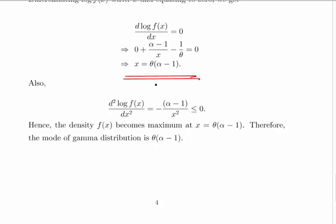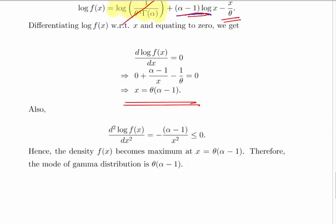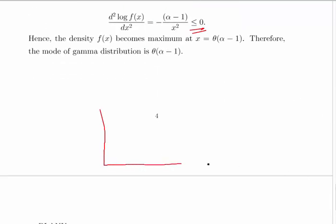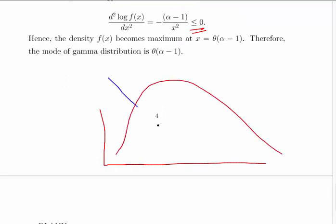Strictly speaking, we should also perform the second derivative test to confirm this is a maximum rather than a minimum. We would take the second derivative of the log PDF and verify it is less than or equal to zero. However, in the context of probability distributions, this step is often considered superfluous because the shape of the PDF guarantees that any critical point must be a maximum.